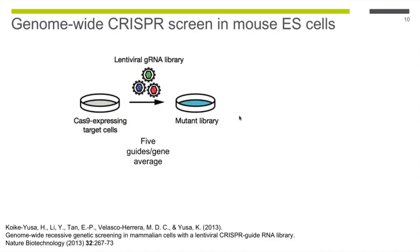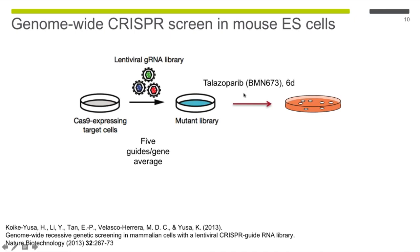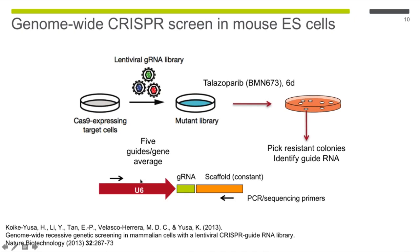The first screen for PARP inhibitor resistance used a genome-wide library in mouse embryonic stem cells with five guides per gene on average — about 100,000 guides total. In a simple screen, cells were exposed to a high concentration of the PARP inhibitor talazoparib (also known as BMN673) for six days, at a concentration that would normally kill all wild-type cells. Surviving colonies were picked, a PCR was done on the stably integrated lentiviral construct, and sequencing identified which guide RNA was present in surviving cells.